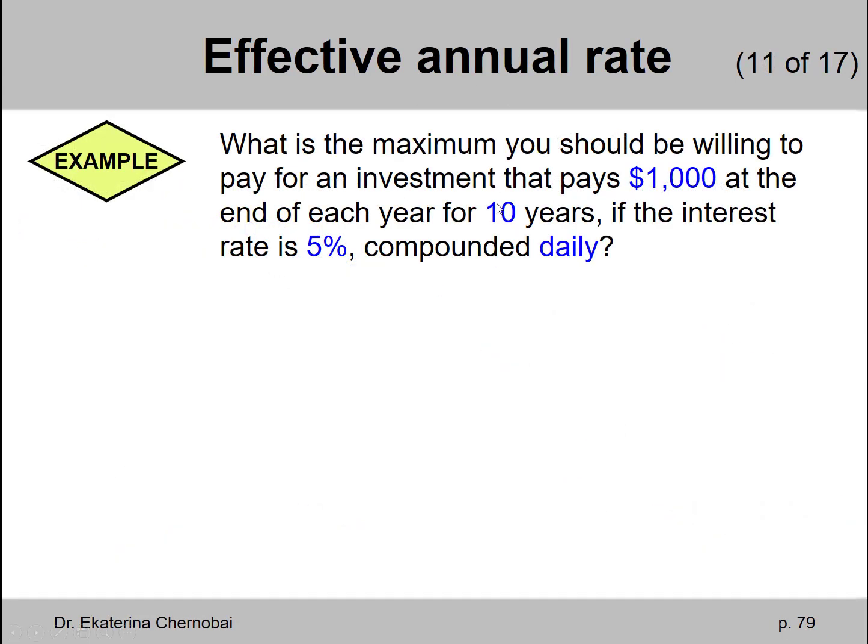Example. What is the maximum you should be willing to pay for an investment that pays $1,000 at the end of each year for 10 years if the interest rate is 5% compounded daily?